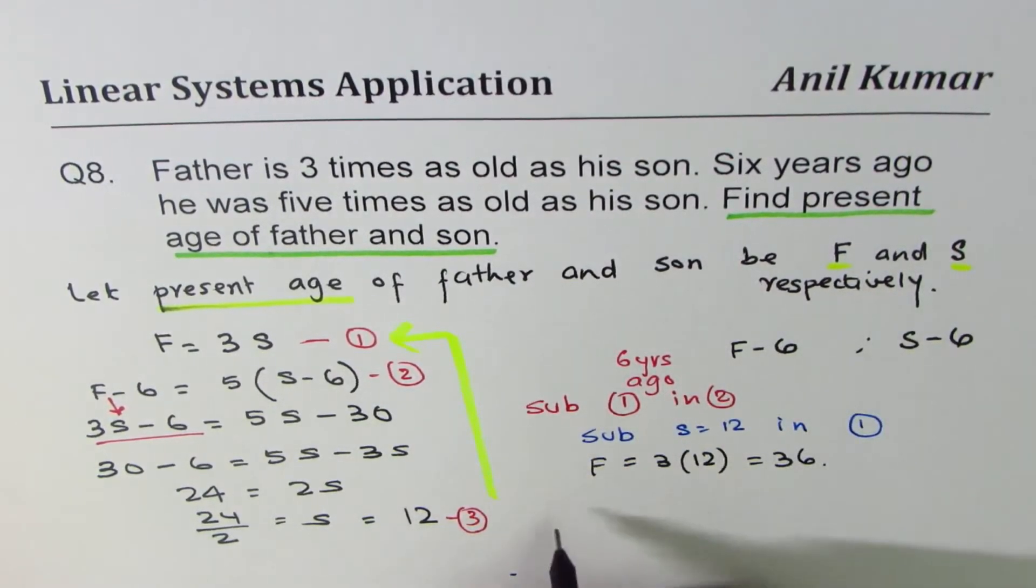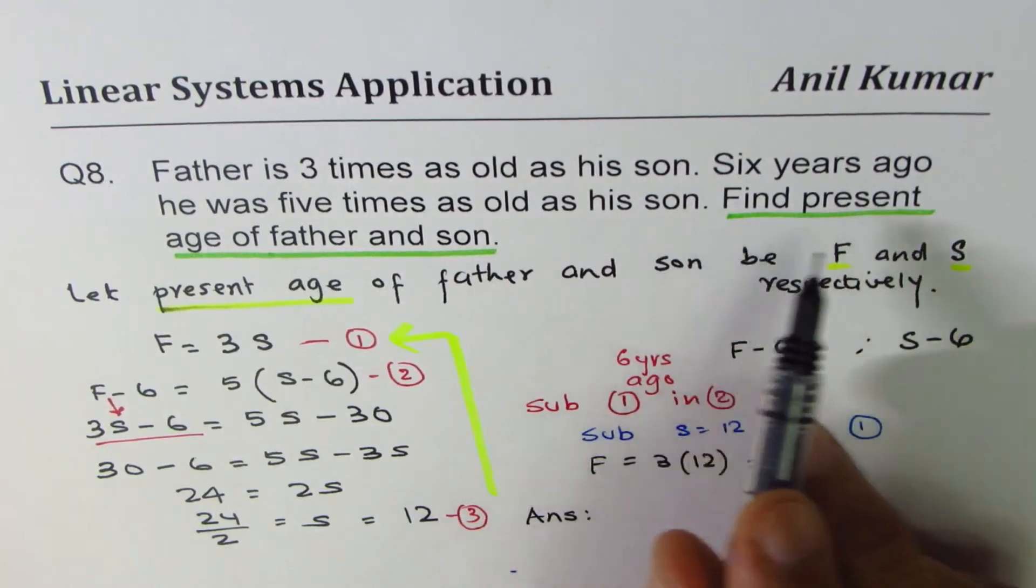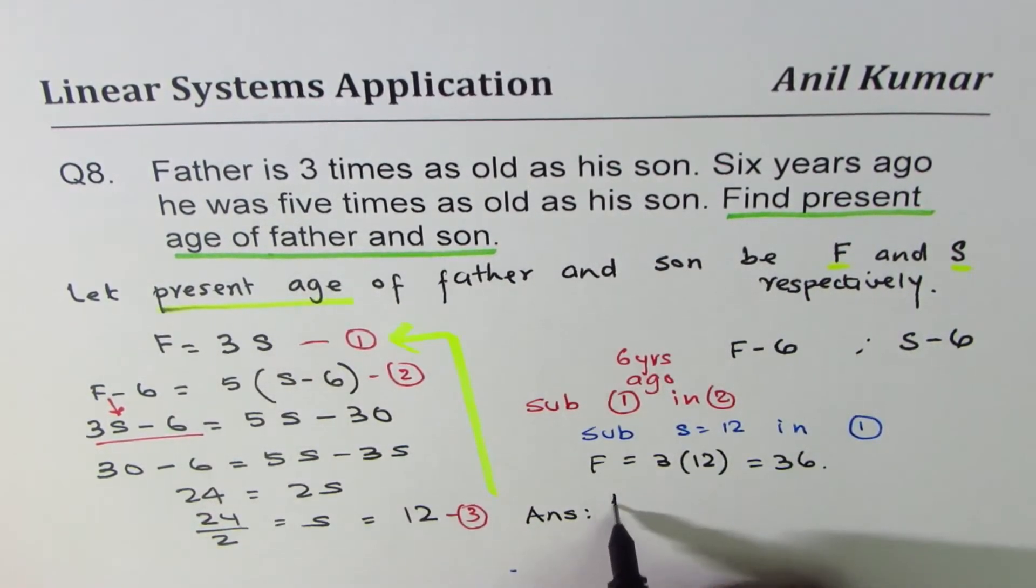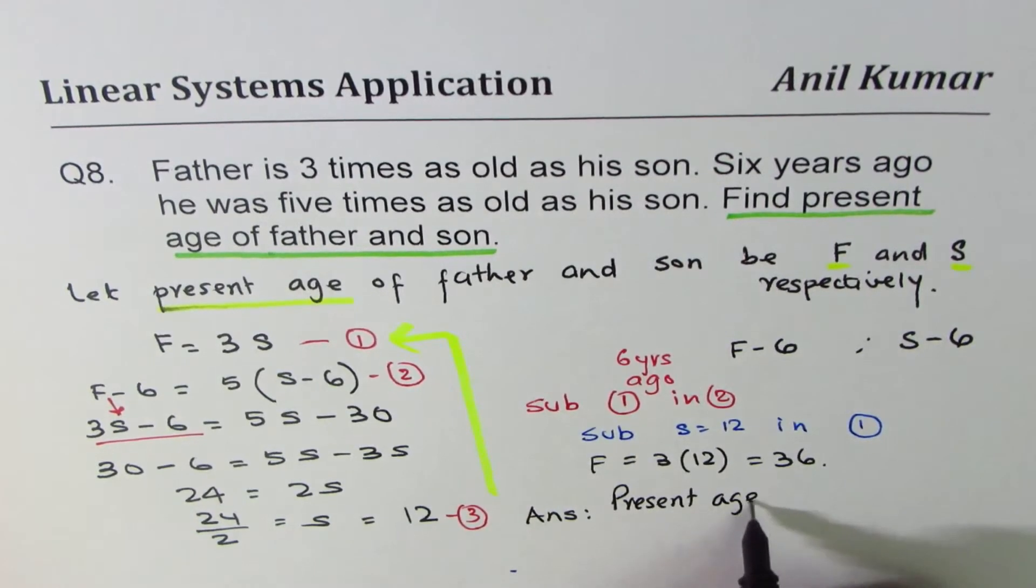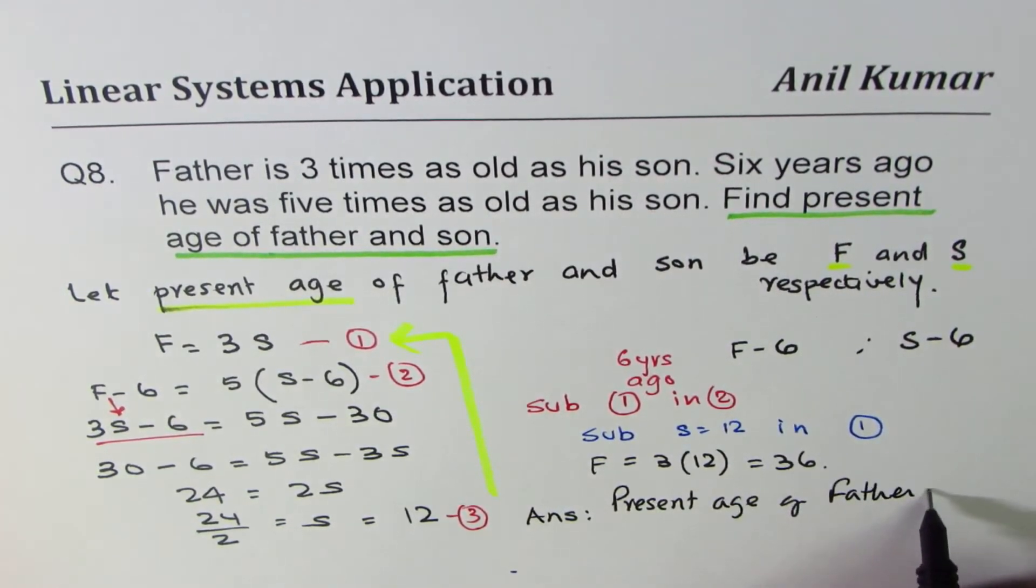Now, any word problem, you have to write down your answer clearly. So answer is find present age of father and son. Present age of father is 36 years, and that of son is 12 years.